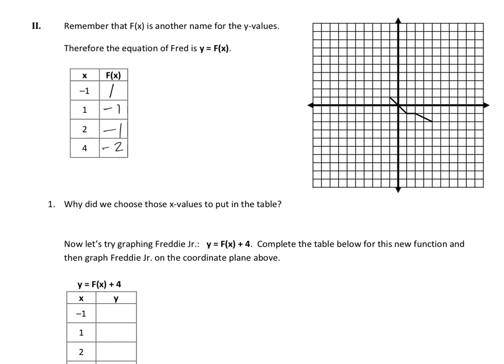I'm going to run through the three transformations quickly that you are responsible for understanding. Using the notes with parent functions, I have the f(x) function and the critical or characteristic points already filled in. I used the graph to find the corresponding f(x) values — the y-values that went with those x-values — and filled in the chart. The critical points are where the graph changes.